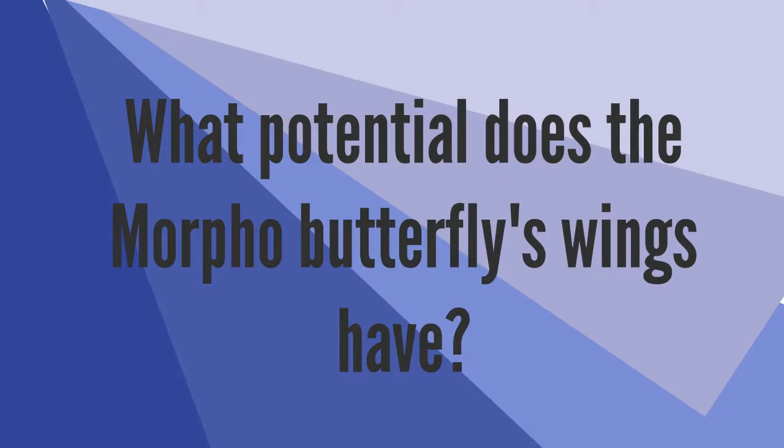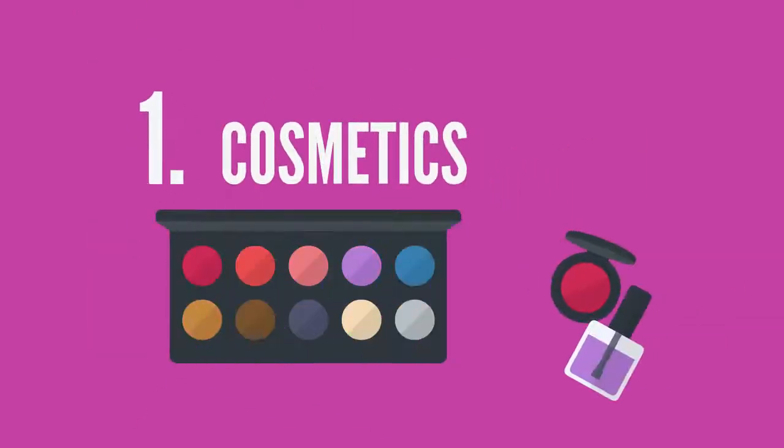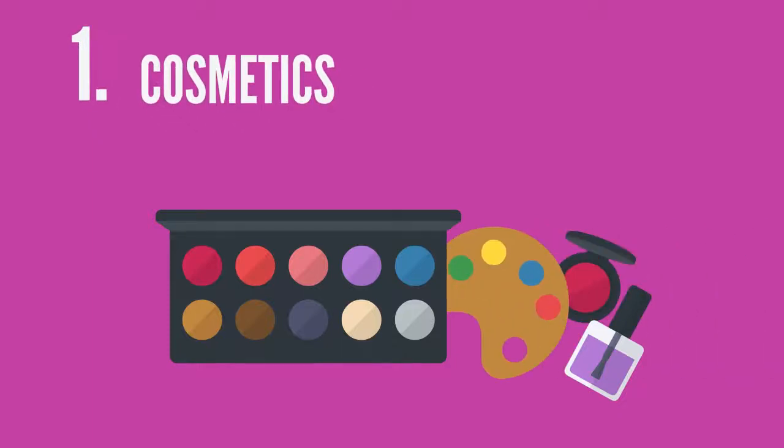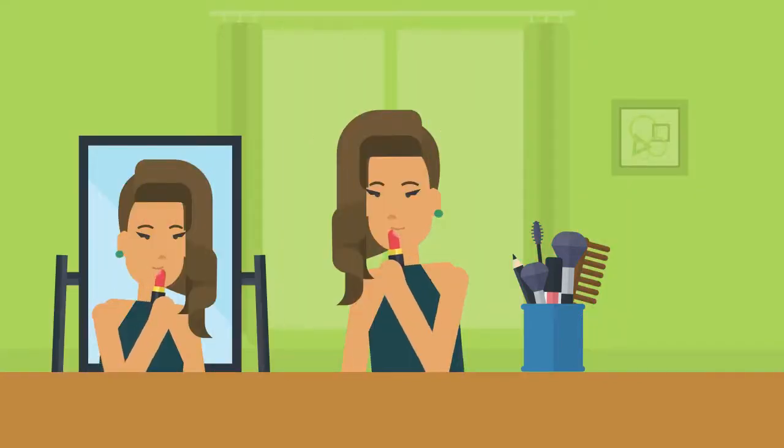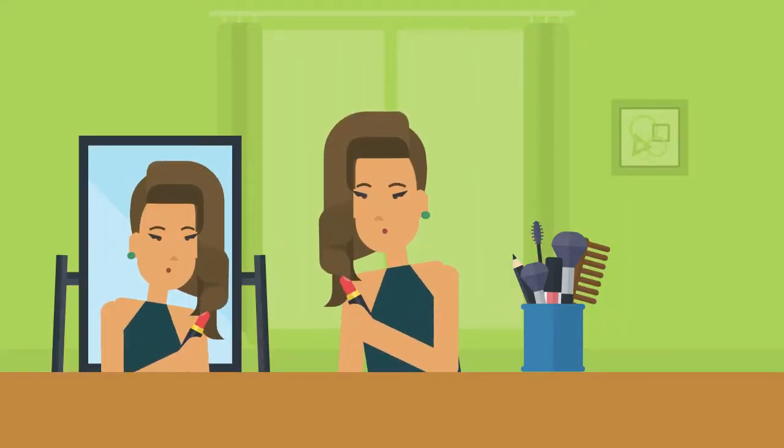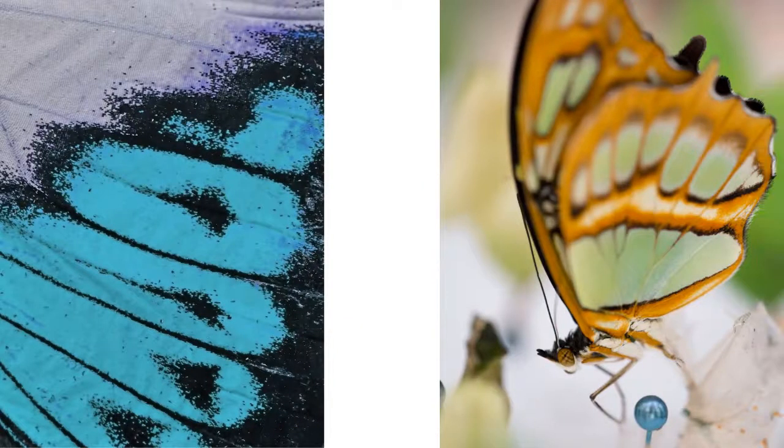What potential does the morpho butterfly's wing have? For one thing, scientists are hoping to simplify how they make paints, makeup, and nail polish without the use of dyes or chemicals that can be harmful to our health and the environment. They can do this by using the structure, properties, and materials from the wings to make bright pigments and colors.